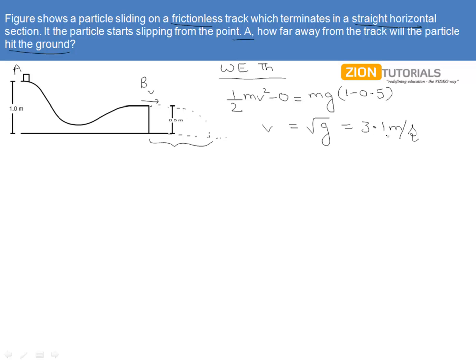Now with this velocity, this is actually the speed because we got the V² and we got the magnitude. How we came to know the direction is that it is moving on a straight horizontal section now. So obviously the velocity will be in the horizontal direction, that is why we got the velocity to be 3.1 in the horizontal direction.